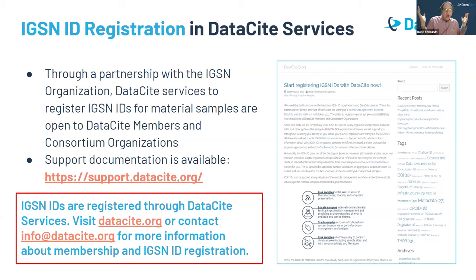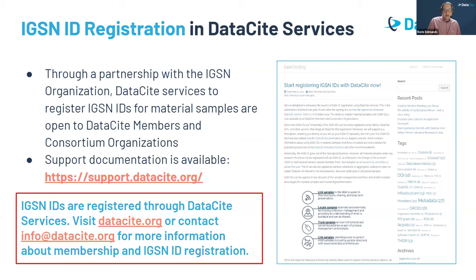The big news over the last few years has been the partnership between DataCite and the IGSN organization. Through that, DataCite services to register IGSN IDs for material samples is now open to all DataCite members and all consortium organizations, and we do have support documentation as well.